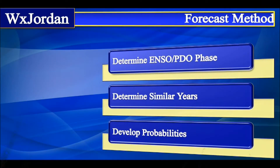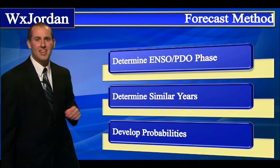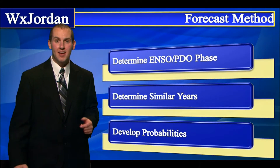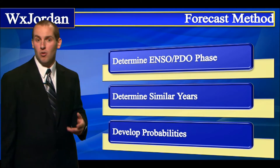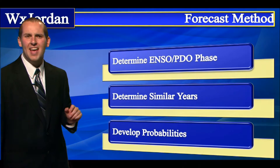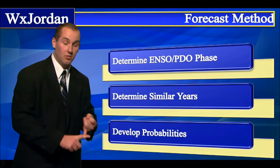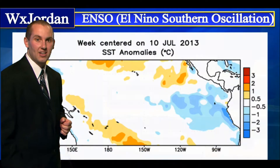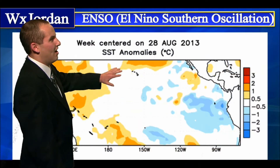My forecast method: first I determined what the ENSO and PDO phase would be. Then I determined similar years to what we were going to have this year. Then I developed probabilities on what we'll see — either more snow, less snow, or average snow. We'll get to all that in just a few moments.